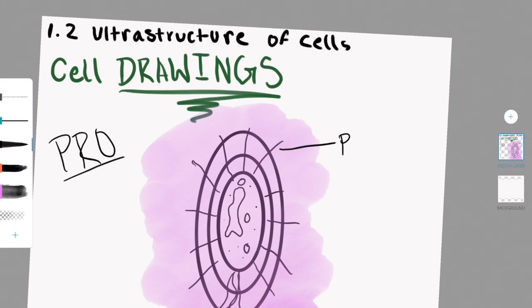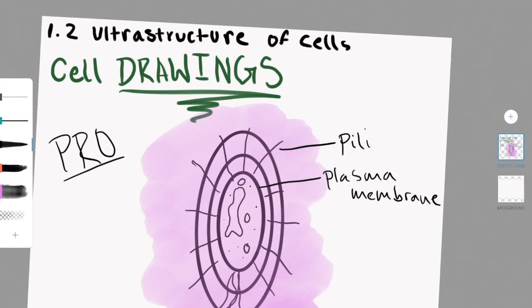We'll get into what all the different parts of the cells are very soon. The different types are plant cells, animal cells, fungi cells, and protist cells. A protist cell is basically a eukaryotic unicellular organism that is not a plant or an animal or a fungal cell.